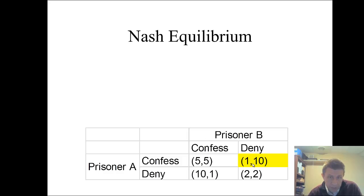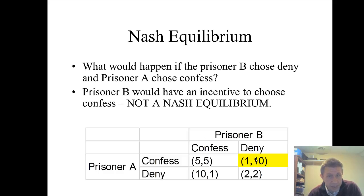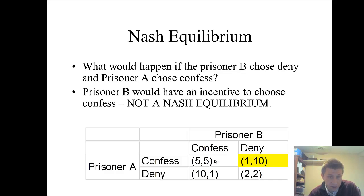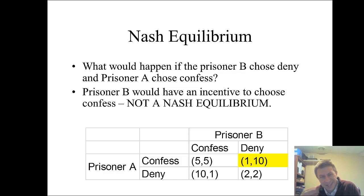What happens if prisoner A is confessing and prisoner B is denying? Prisoner B would want to switch from deny to confess. It's not a Nash equilibrium — 10 years in prison is worse than 5 years in prison. Because prisoner B has an incentive to deviate, to switch the choice, this is not a Nash equilibrium.